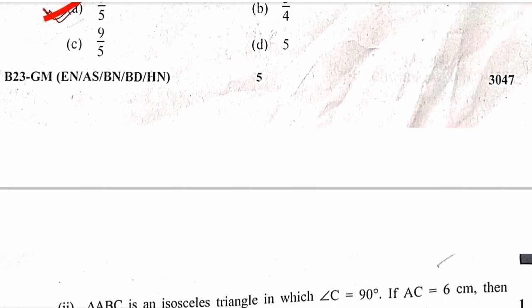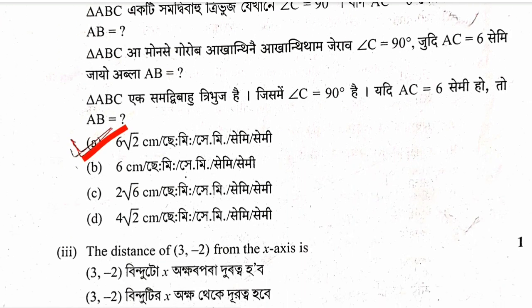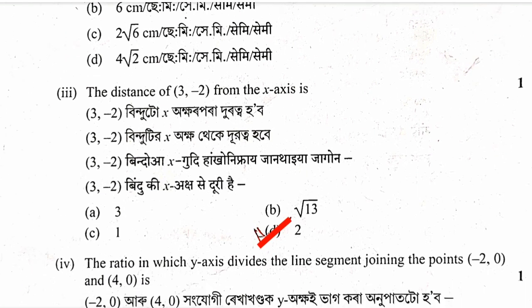Question 3: Triangle ABC is an isosceles triangle in which angle C is 90 degrees. If AC equals BC equals 6 cm, then find AB. Since C is 90 degrees, AB is the hypotenuse. Using Pythagoras theorem, AB equals 6 root 2 cm. Option A is correct.